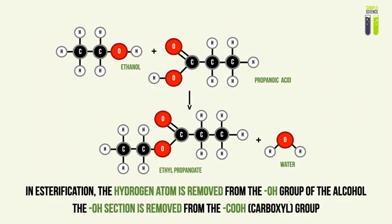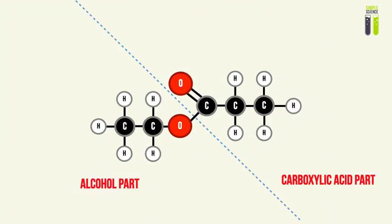The second part comes from the carboxylic acid. The esterification process happens when the hydrogen atom is removed from the OH group of the alcohol, and the OH group is removed from the COOH group — the carboxyl group — from the carboxylic acid. I've circled here the H from the alcohol and the OH from the carboxylic acid. These two items combine to form that water molecule.